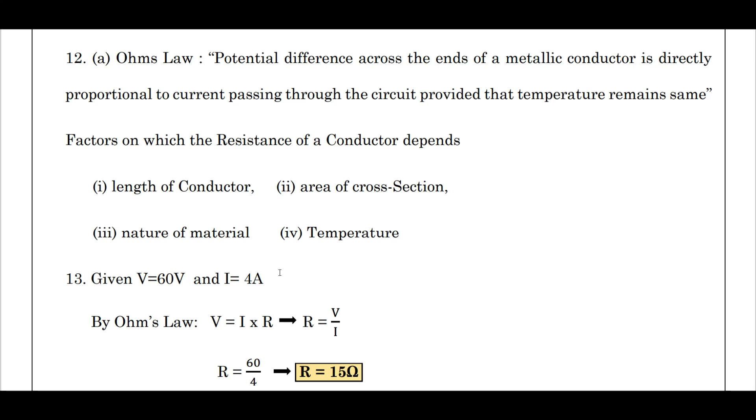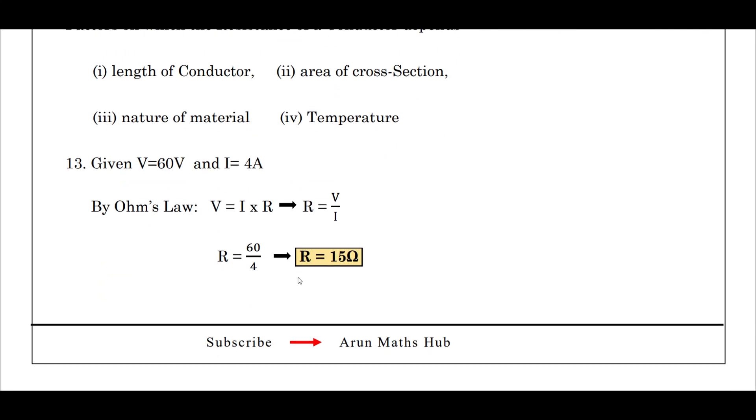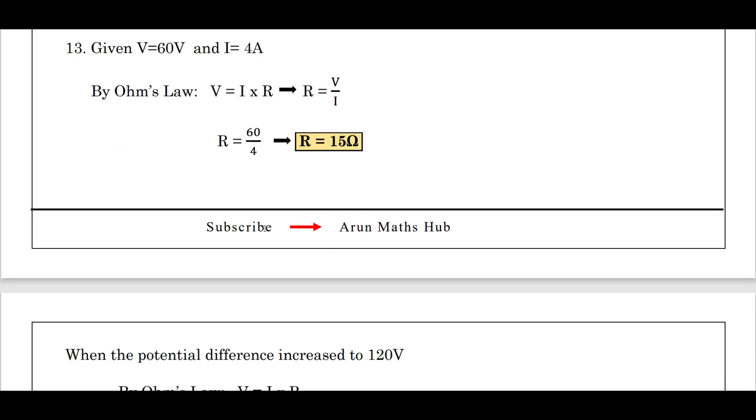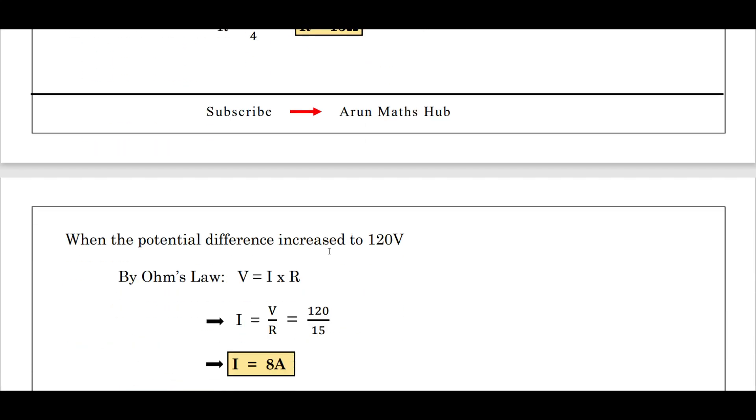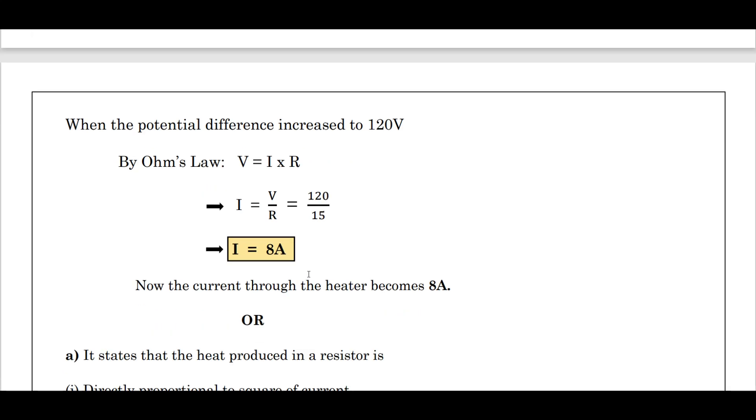13th question problem: given the potential difference between the terminals of an electric heater is 60 volts. Given voltage equals 60 volts, current equals 4 ampere. Now by Ohm's law, V = IR, R = V by I, we get R equals 15 ohm. Now when the potential difference increased to 120 volt, what is the current? By Ohm's law, V = IR, I = V by R, 120 divided by 15, we get current I equals 8 ampere. Now the current to the heater becomes 8 ampere.